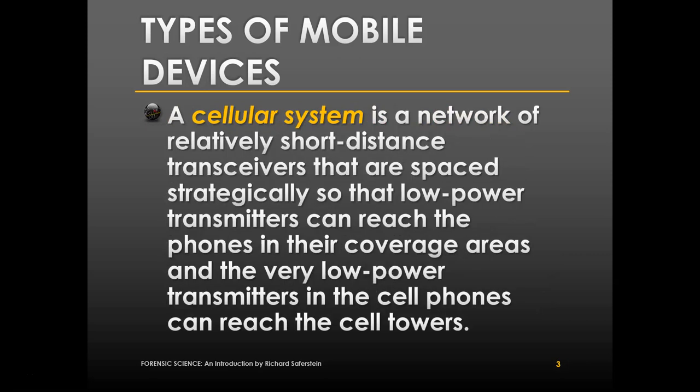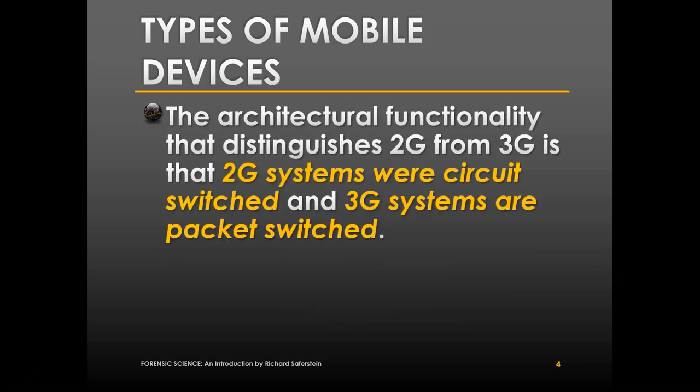A cellular system is a network of relatively short-distance transceivers spaced strategically so that low-power transmitters can reach phones in their coverage areas, and the very low-power transmitters in the cell phones can reach the cell towers. We're essentially bouncing signals from one thing to another.